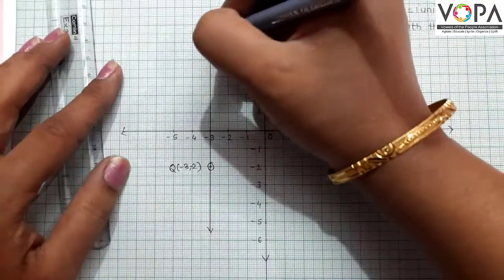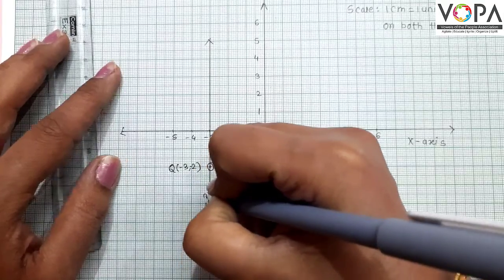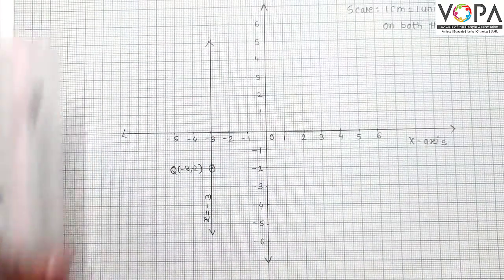This is a graph of line equation x equals -3.